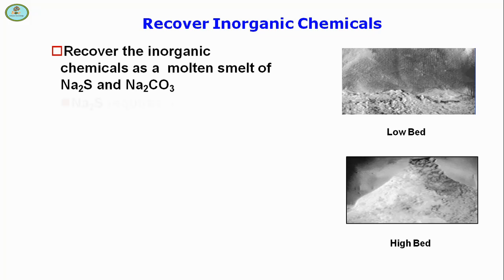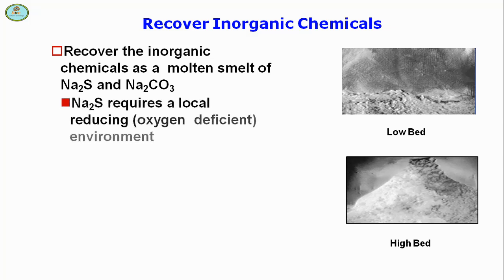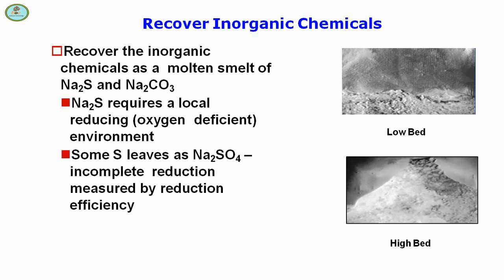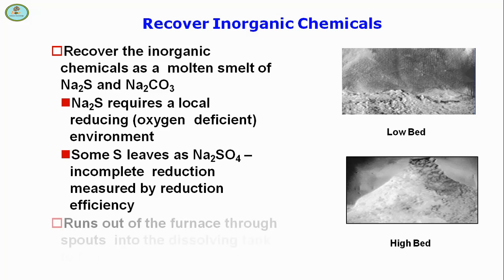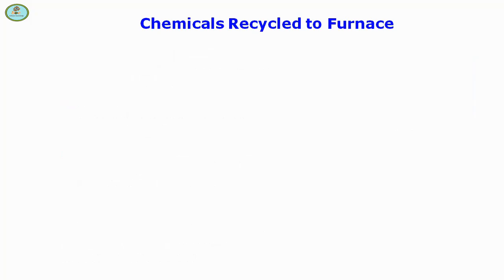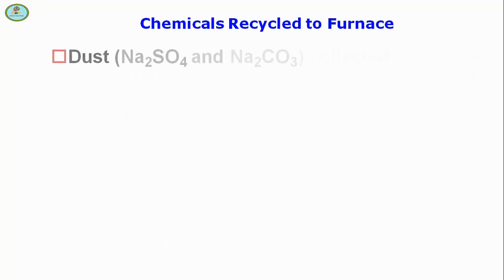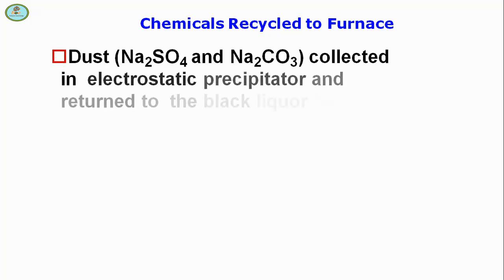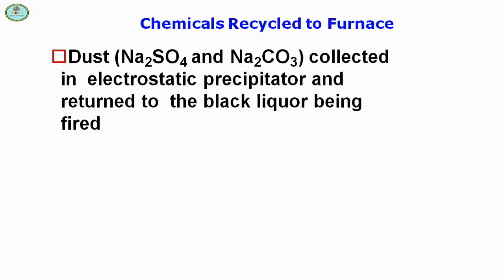Na2S formation requires a local reducing, oxygen-deficient environment. Some ash leaves as Na2SO4 due to incomplete reduction, which is measured by reduction efficiency. Smelt runs out of the furnace through spouts into the dissolving tank to form green liquid. Chemical dust — Na2SO4 and Na2CO3 — is collected in the electrostatic precipitator.